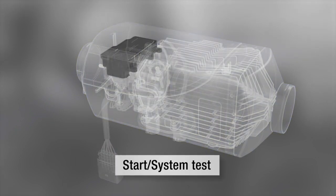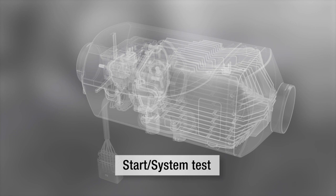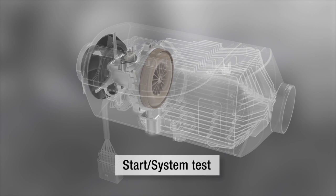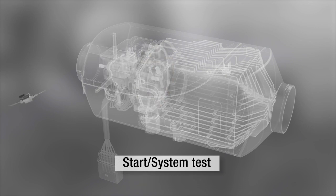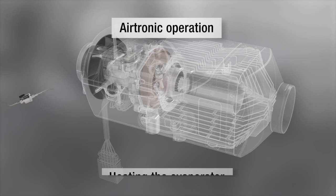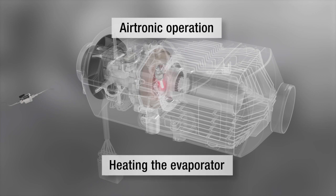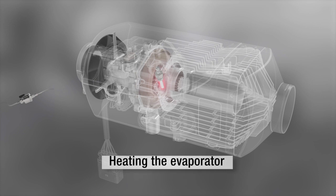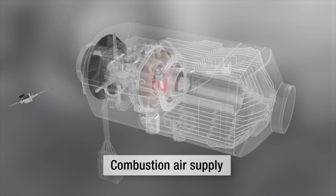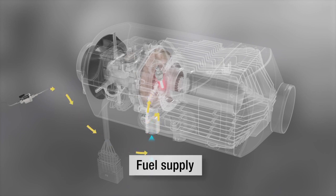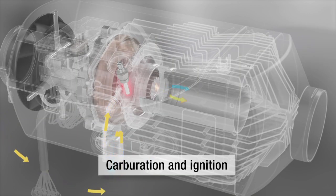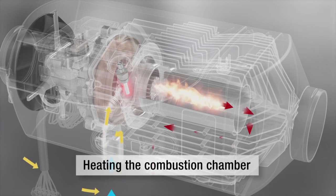When it starts up, the heater automatically runs a system test. The glow pin heats the evaporator in the combustion chamber. The fan impeller starts up and blows air into the combustion chamber. The fuel metering pump supplies fuel which evaporates in the evaporator, mixes with the air and ignites in the combustion chamber. The flame spreads evenly through the combustion chamber.